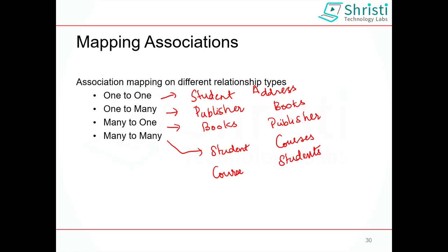In case of many-to-one, it is the same thing — publisher id will be automatically added to the books table. In case of many-to-many, a common table will be created with the student id and the courses id. So we don't have to bother about creating the tables with foreign key constraints. In the upcoming videos, let us discuss these associations one by one. That's it. Thank you.